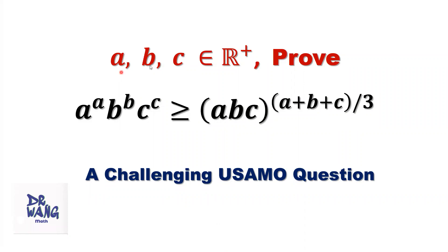If a, b, and c are positive real numbers, prove that a^a · b^b · c^c is greater than or equal to (abc)^((a+b+c)/3).